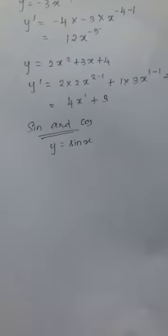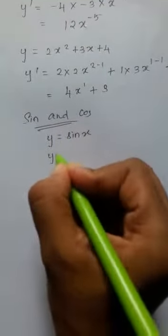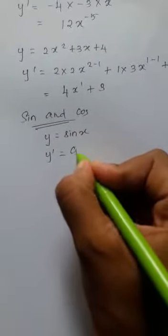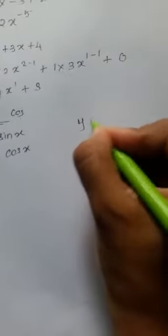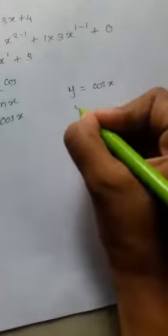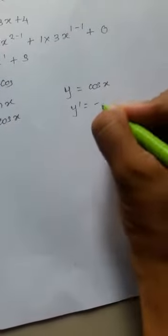Then the derivative of y with respect to x will be y dash equals cos x. When I get y equals cos x, my derivative will be negative sin x.